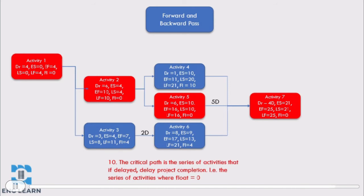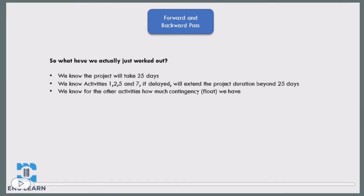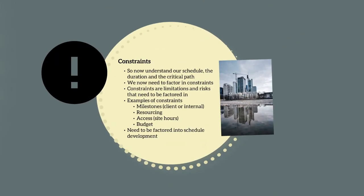So what have we actually worked out from this analysis? We know this project will take 25 days to complete. We know that activities 1, 2, 5 and 7 are the critical path, and that if these activities are delayed then the project duration will be longer than 25 days. We also know for the other activities how much contingency we have. After our forward and backward pass we have a really good understanding of our project schedule, the duration and the critical path.